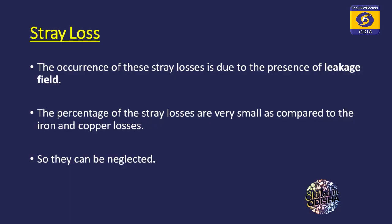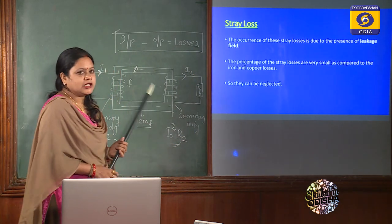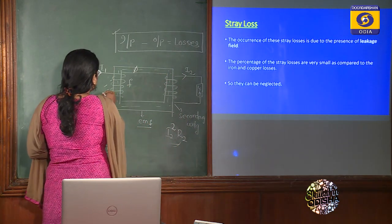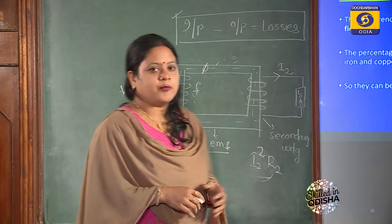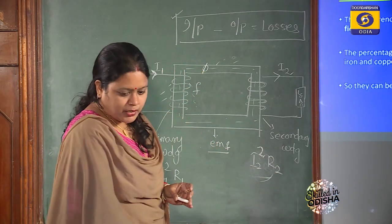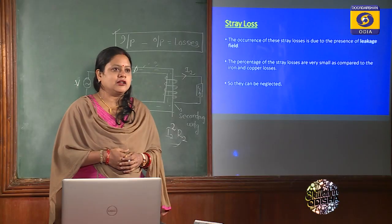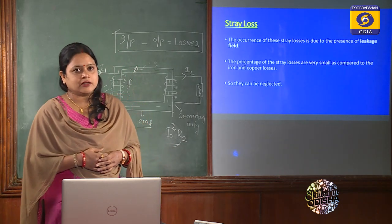Next comes stray losses. The occurrence of stray losses is due to the presence of leakage flux in the transformer. Where there is leakage of flux, stray losses occur. But the percentage of stray loss is very small compared to iron loss or copper loss, so it can generally be neglected.